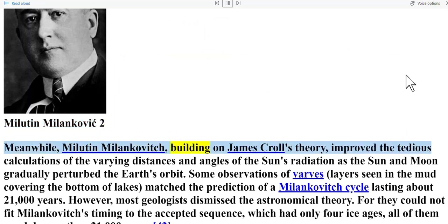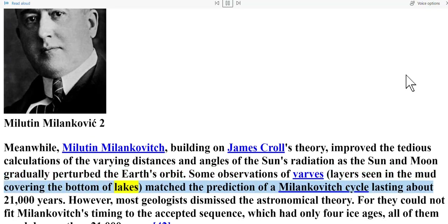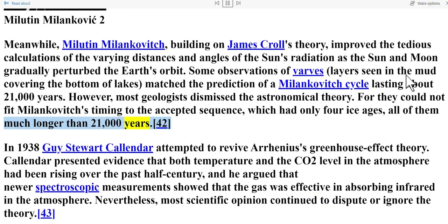Meanwhile, Milutin Milanković, building on James Croll's theory, improved the tedious calculations of the varying distances and angles of the sun's radiation as the sun and moon gradually perturbed the Earth's orbit. Some observations of varves matched the prediction of a Milanković cycle lasting about 21,000 years. However, most geologists dismissed the astronomical theory, for they could not fit Milanković's timing to the accepted sequence, which had only four ice ages all of them much longer than 21,000 years.